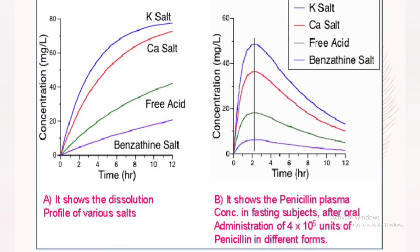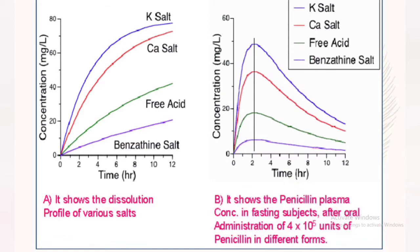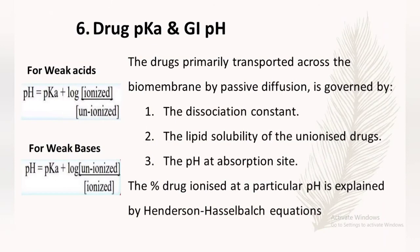Another example shows potassium salt, calcium salt, free acid, and benzathine salt. Potassium salt is the most readily absorbed; calcium salt will be more absorbed than benzathine salt; and the free acid and benzathine salt will be the least absorbed from the body.